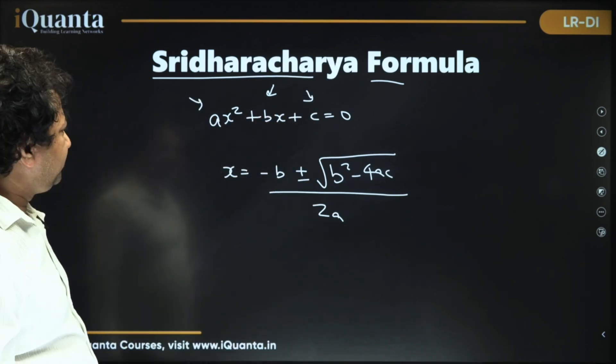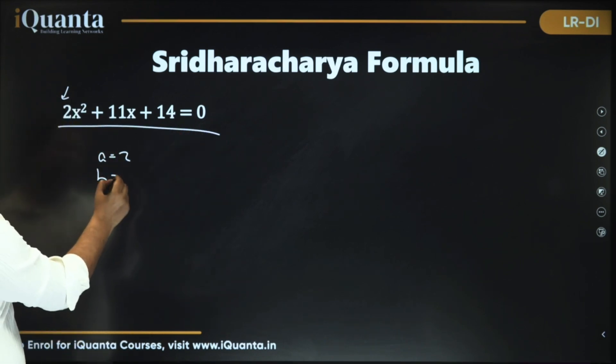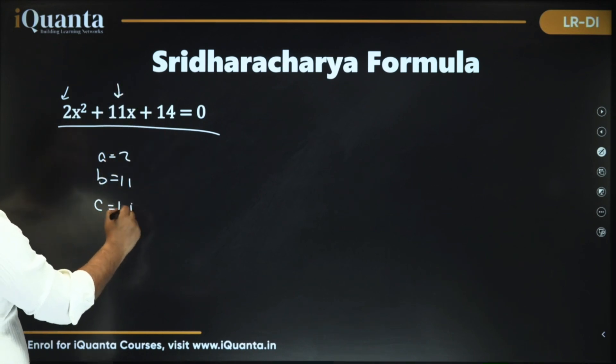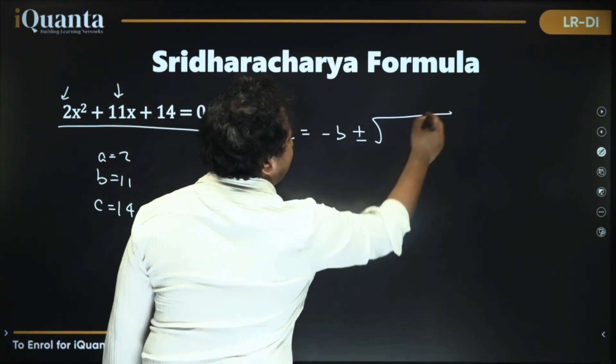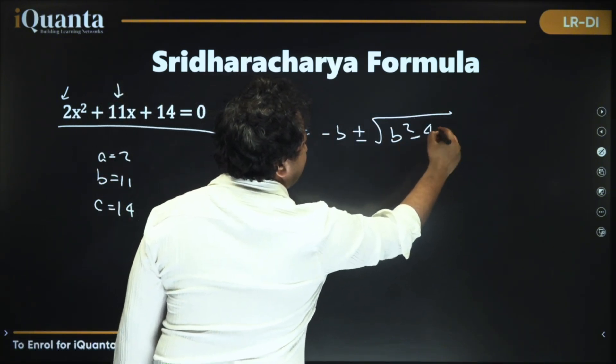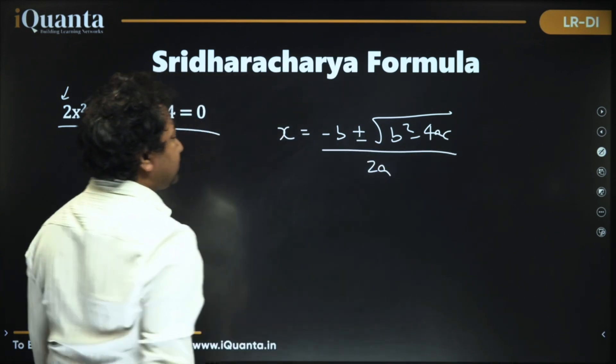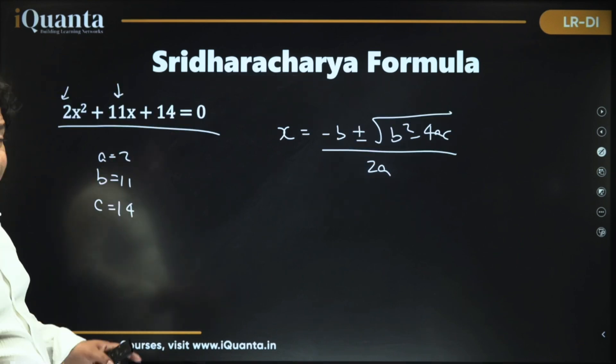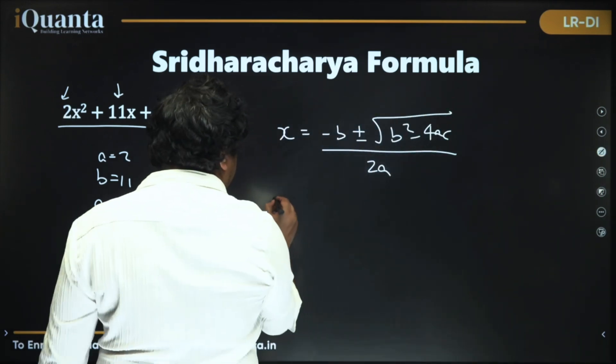Let's try to solve a few questions. Here we have one. So here we can see that a = 2 coefficient of x square, b = 11 coefficient of x, and c is the constant term is 14. So let's put in the formula, plug in the values and get the answer. Let's see what happens. And we are using plus and minus both because we have two roots. We have two roots. So once we take a root with plus, other will be with minus.